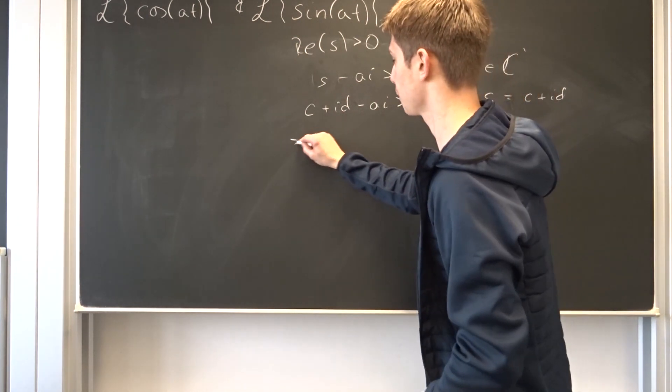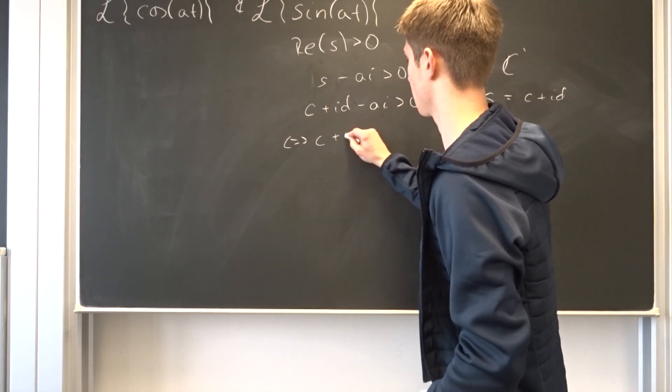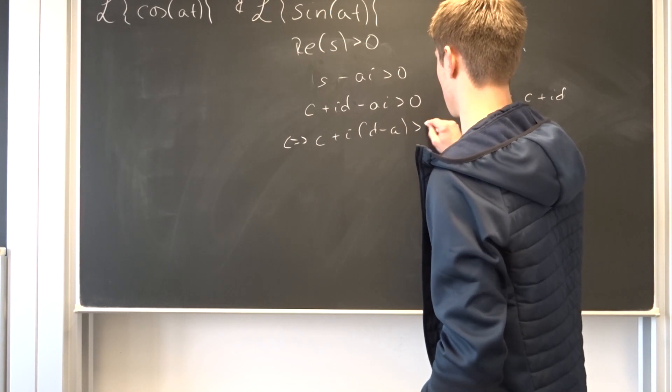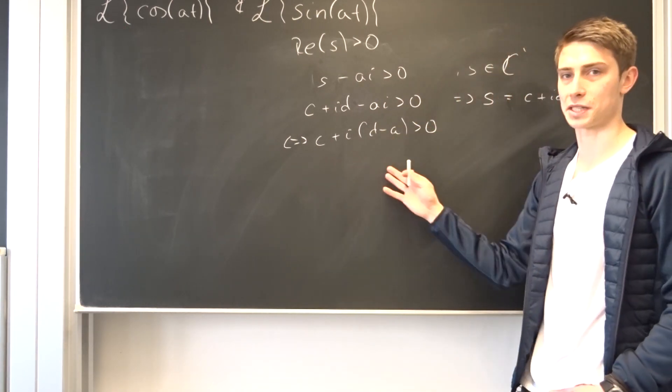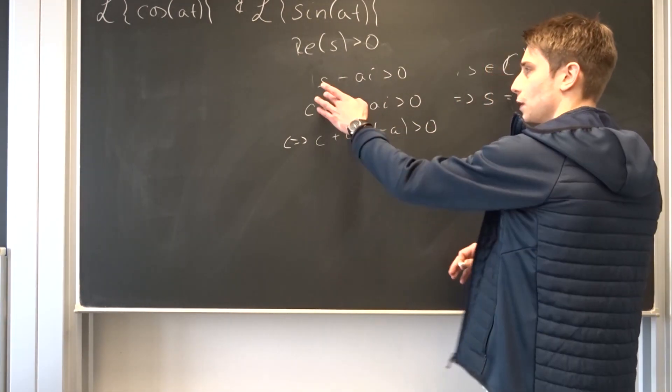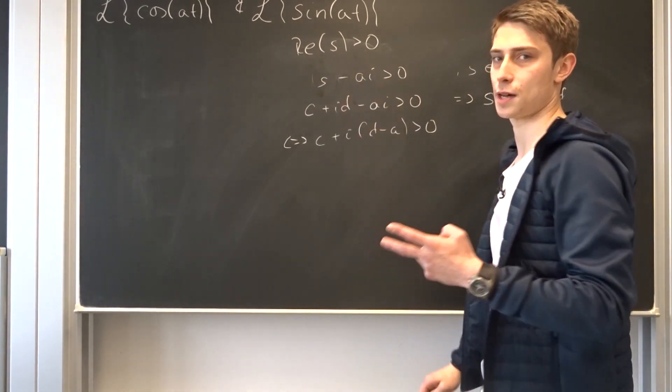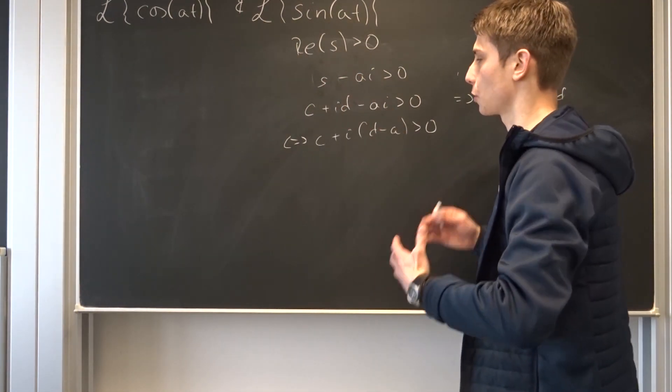And now we can factor out this i, so that means that c plus i times d minus a has to be greater than zero. And that's a complex number right here. So adding two complex numbers together gives out a complex number once again.